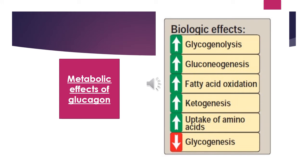In this figure, we can easily see the different metabolic effects of glucagon. In the figure, the green bar indicates procedures that glucagon stimulates, and the red bar indicates procedures that glucagon inhibits. Glucagon stimulates glycogenolysis, gluconeogenesis, fatty acid oxidation, ketogenesis, and uptake of amino acids for gluconeogenesis. While glucagon inhibits glycogenesis — glycogen synthesis — and blocks glucose storage.